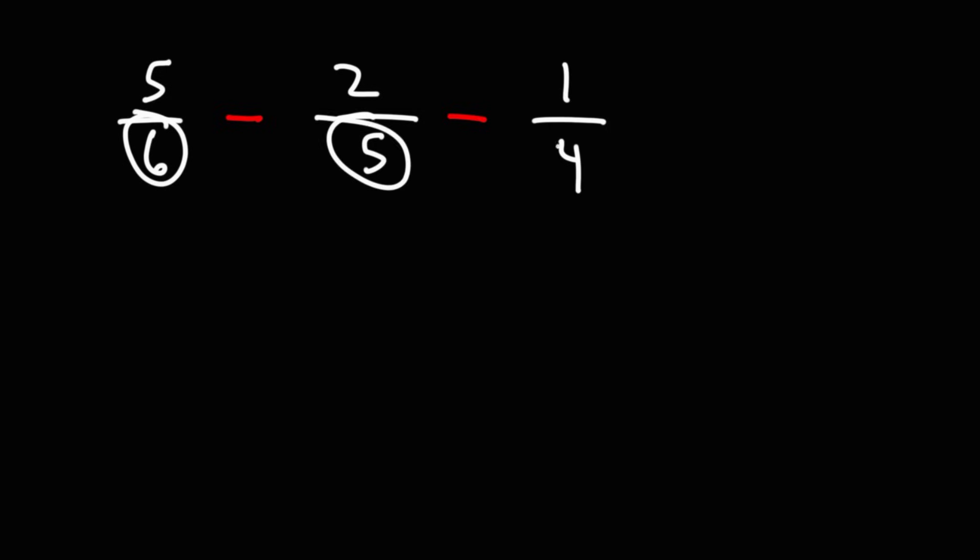So we have 6, 5, and 4. A simple way to find the same denominator is to multiply the three denominators. It may not give us the LCM, the least common denominator, but nevertheless, it will be a common denominator.